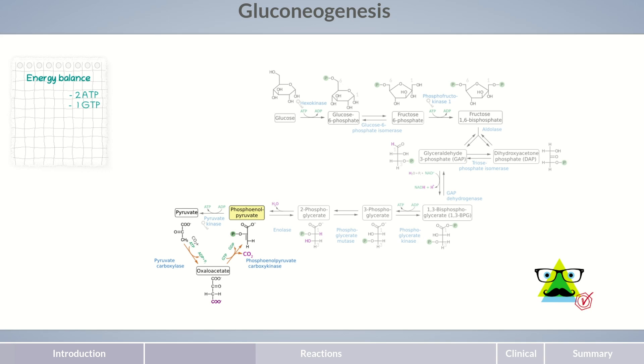For each molecule of glucose, two GTP molecules are consumed. We'll add these as well to our energy balance. An important difference between glycolysis and gluconeogenesis is the reaction sites. Glycolysis only occurs in the cytosol.